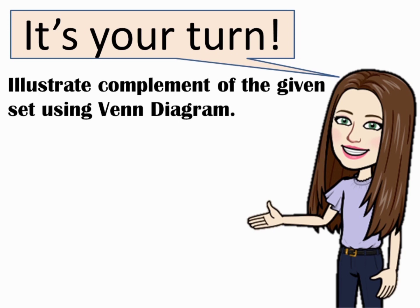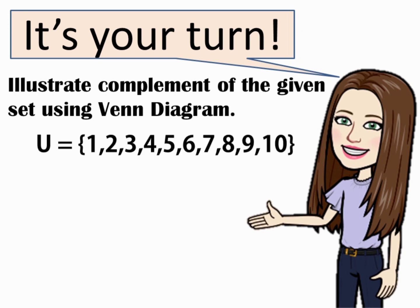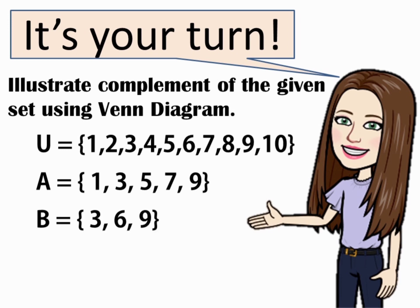Okay, now it's your turn. You can pause the video to answer the activity. If U is equal to 1 to 10, and A is equal to 1, 3, 5, 7, 9, and B is equal to 3, 6, 9, find A complement and B complement.